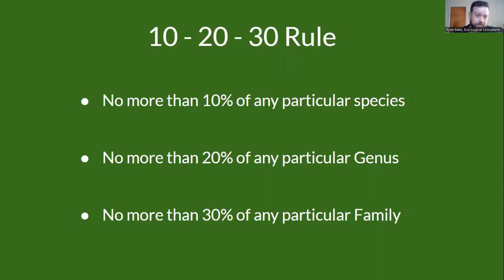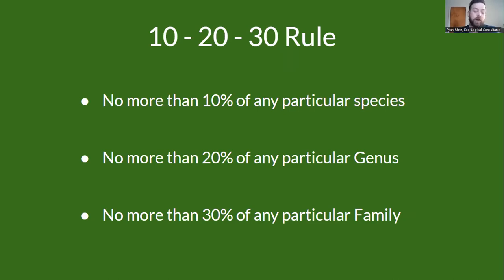The 10-20-30 rule is something heard in just about every urban forestry class or presentation: no more than 10% of any particular species in your management zone, no more than 20% of any particular genus, and no more than 30% of any particular family. This gets tough when using natives — sometimes an area is really only suitable for a handful of species and you won't be able to reach this level of diversity. That's okay. This is the general guideline, and it's ideal — if we could achieve it at every location, this is what we'd want.